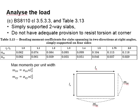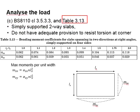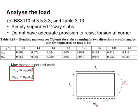To determine the moment acting on a simply supported two-way slab, Table 3.13 may be referred to. This table gives the factors alpha_sx and alpha_sy, which can be substituted into the equations to compute the moment at the shorter span and the moment at the longer span.